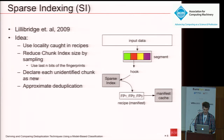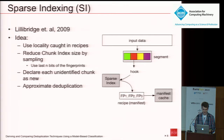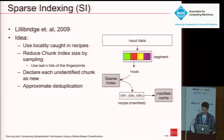Sparse indexing also works with recipes, but in contrast to the other systems, does not hold a full chunk index. Instead, it samples the chunk index so that it is small enough to fit into main memory. The chunk identification roughly goes as follows: the input data is chunked and fingerprinted, and newly created chunks are collected in a so-called segment structure. When this reaches a certain size — roughly 20 megabytes — the system tries to identify the most similar old segments, fetches their recipes, and compares them to the just-created segment. The problem is that this leads to approximate deduplication, as the fetched recipes are not guaranteed to cover every redundant chunk.